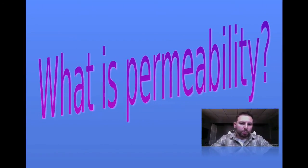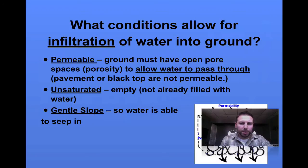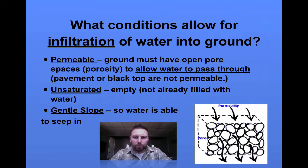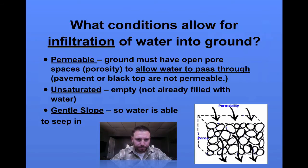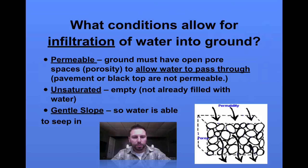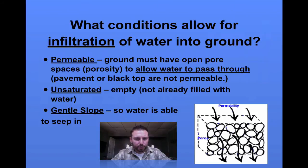Which takes us to permeability, and we mentioned the term a little bit earlier. Permeability is basically where the ground has pores in it to allow water to move into or infiltrate into the ground. There are many characteristics of the ground that can change the permeability or the porosity of the ground, and that can all affect how water moves in. But in order for water to move in, there must be pore spaces or it must be considered permeable.